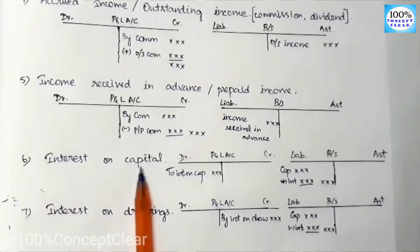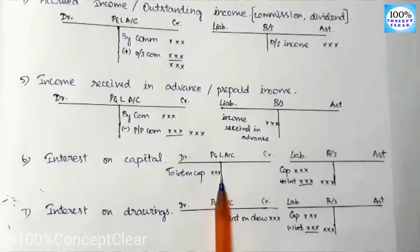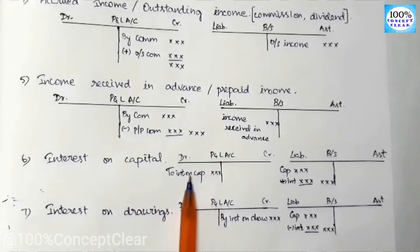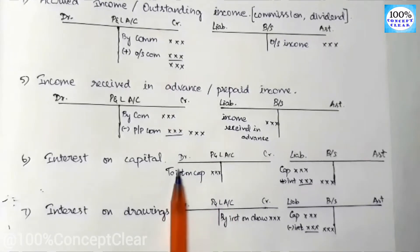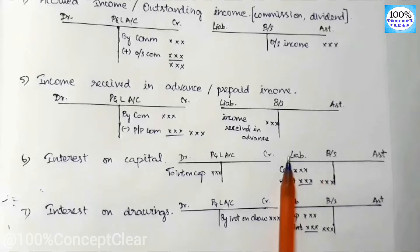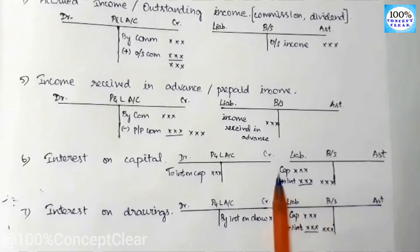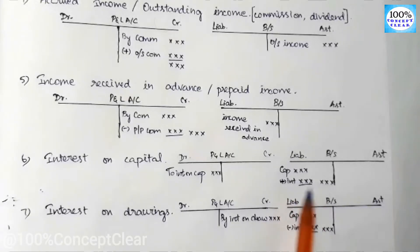The next adjustment is interest on capital. Interest on capital first appears in the P&L account — it is an expense, so it is on the debit side. On the balance sheet, we add the interest on capital to the capital amount in the trial balance, giving us the final capital amount.